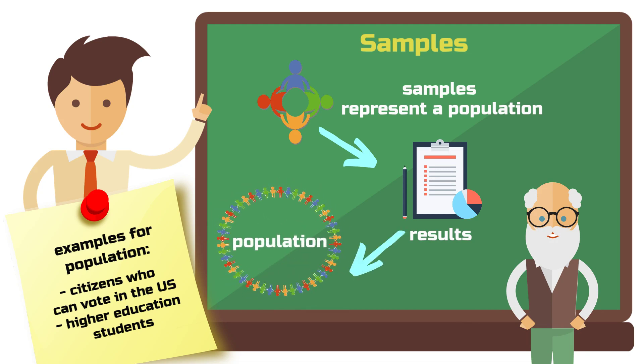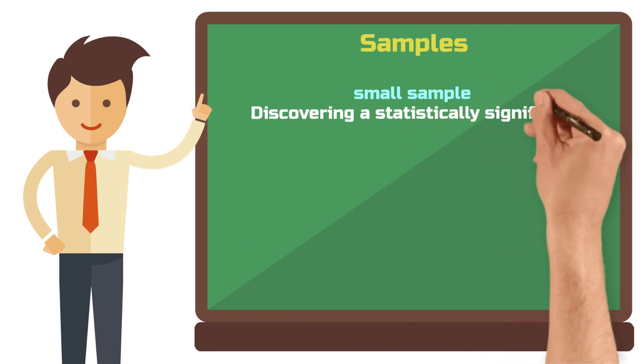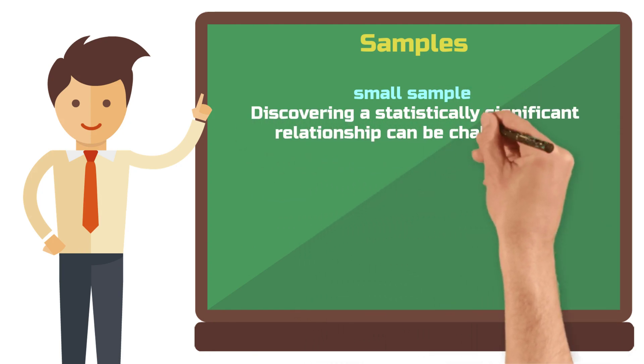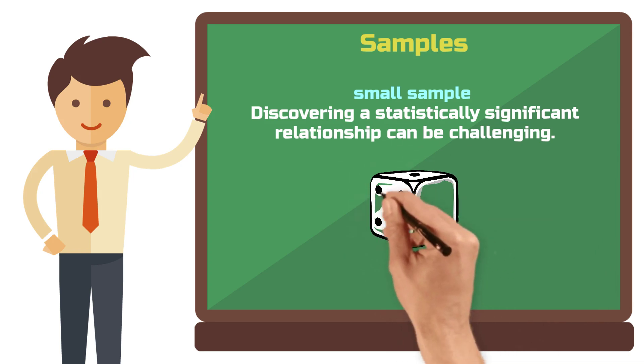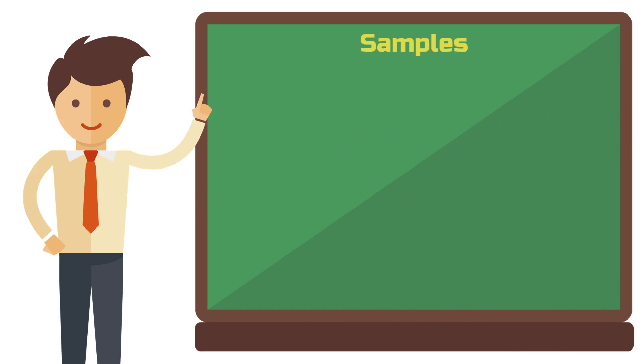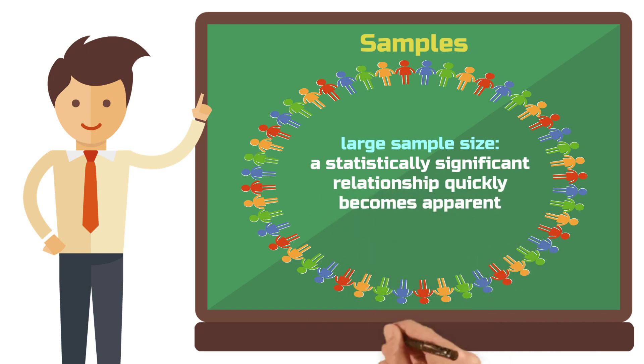The size of these samples is crucial when interpreting significance tests. The smaller the sample, the harder it is to detect a statistically significant relationship. This is because chance plays a greater role and a very large effect must be present for chance to be statistically ruled out. The larger the sample, the quicker statistically significant relationships can be measured. This is because larger samples more closely approximate the entire population, making a random result increasingly unlikely.